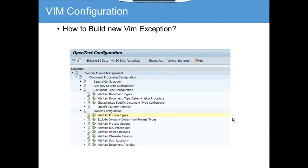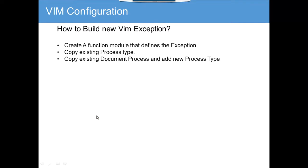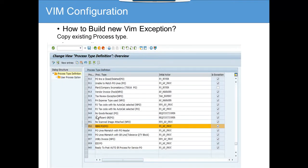To configure a VIM exception, first go to the VIM SPRO VIM IMG and then click on 'Maintain Process Type.' VIM exceptions are covered in three different portions: first, we have to create a function module that defines the exception; then we have to copy the existing process type; and then copy the existing document process and add the new process type to it.